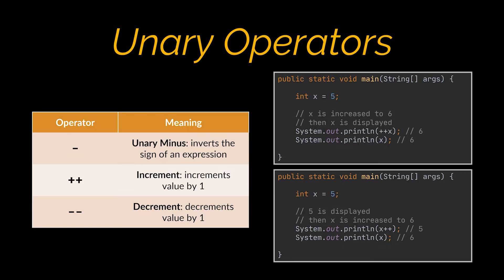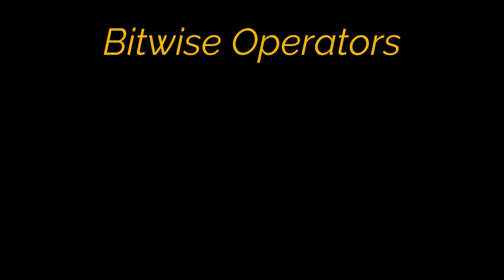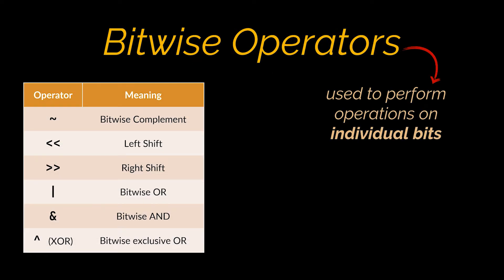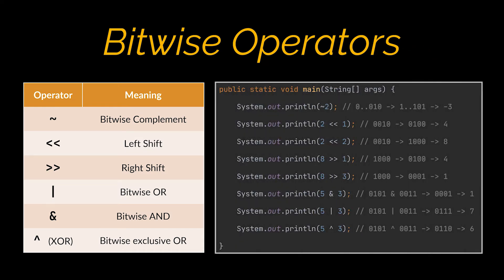We will get into more details in a few minutes. Finally, the bitwise operators are used to perform operations on individual bits. These are generally not used in Java, and in all of my years as a Java developer I've never made use of any. However, I'll leave a list of these operators and examples of their usages on the screen for you, so feel free to pause the video and take a look at them.